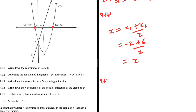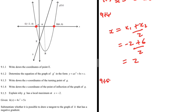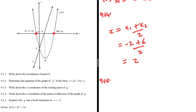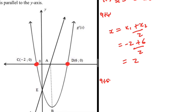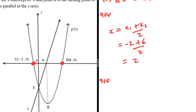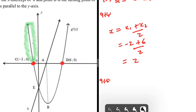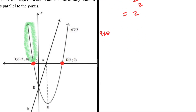Question 9.1.5: explain why G has a local maximum at x = −2. From minus infinity to minus 2, the gradient of G(x) is positive, as we can see that G'(x) lies above the X-axis.